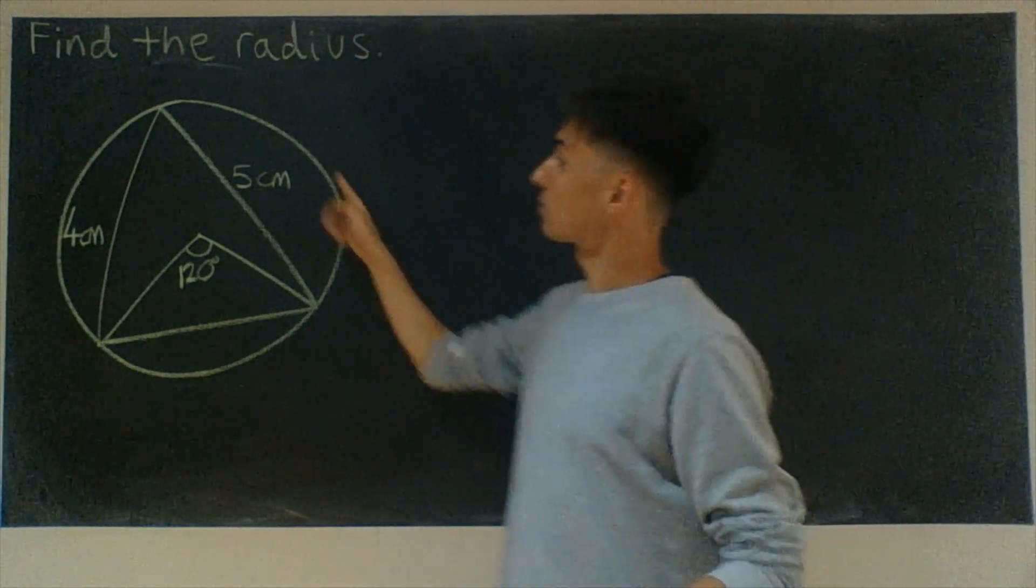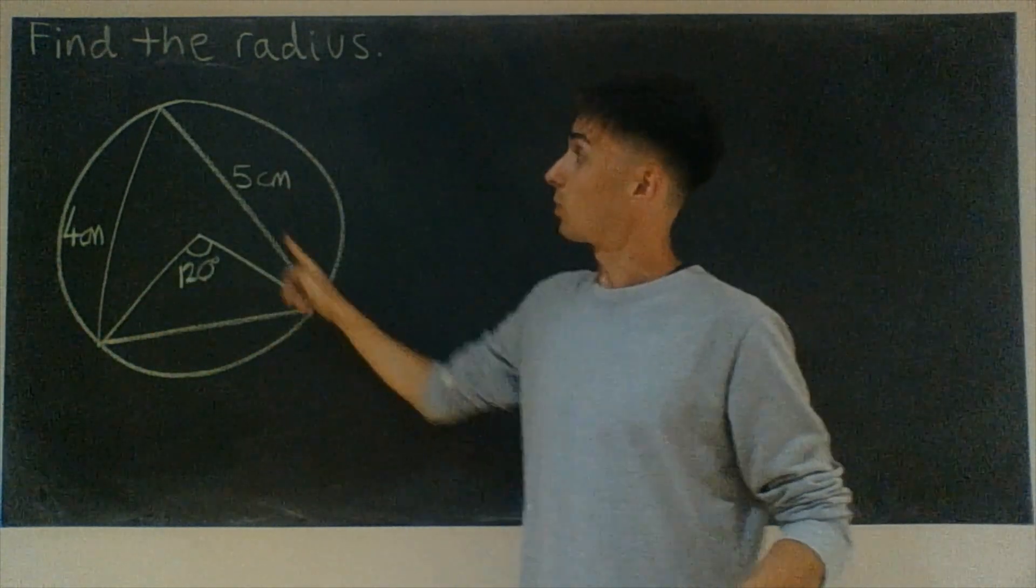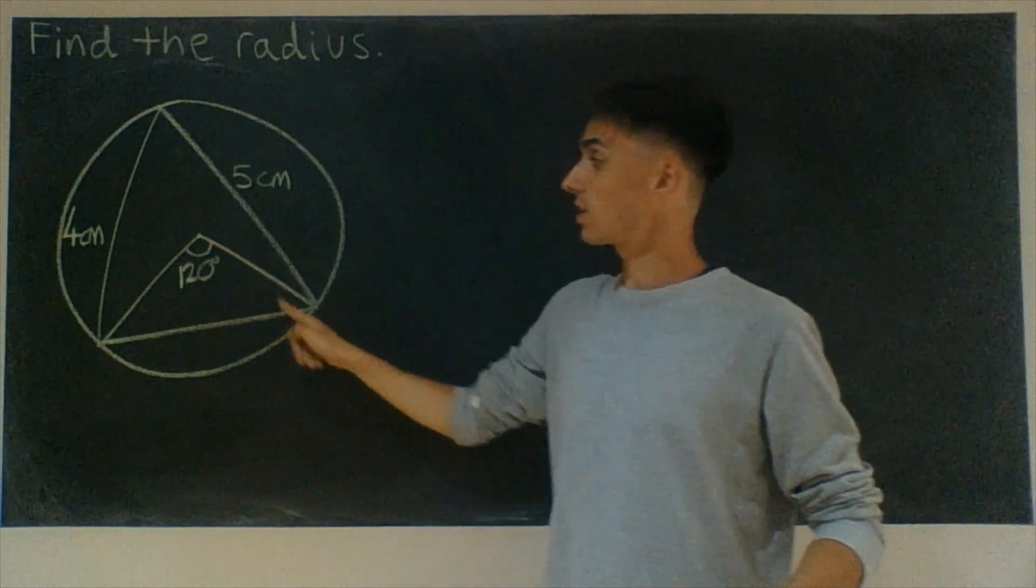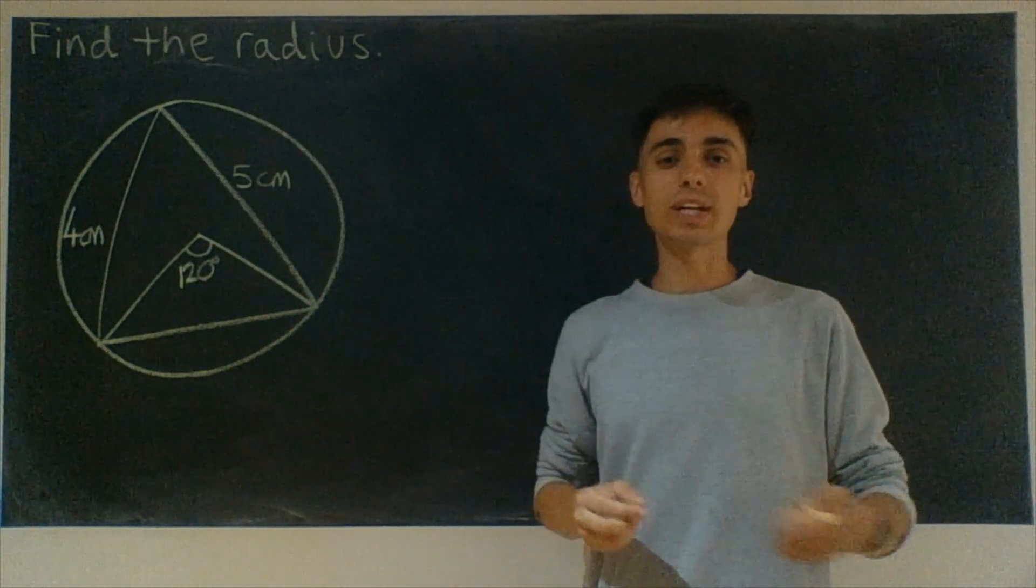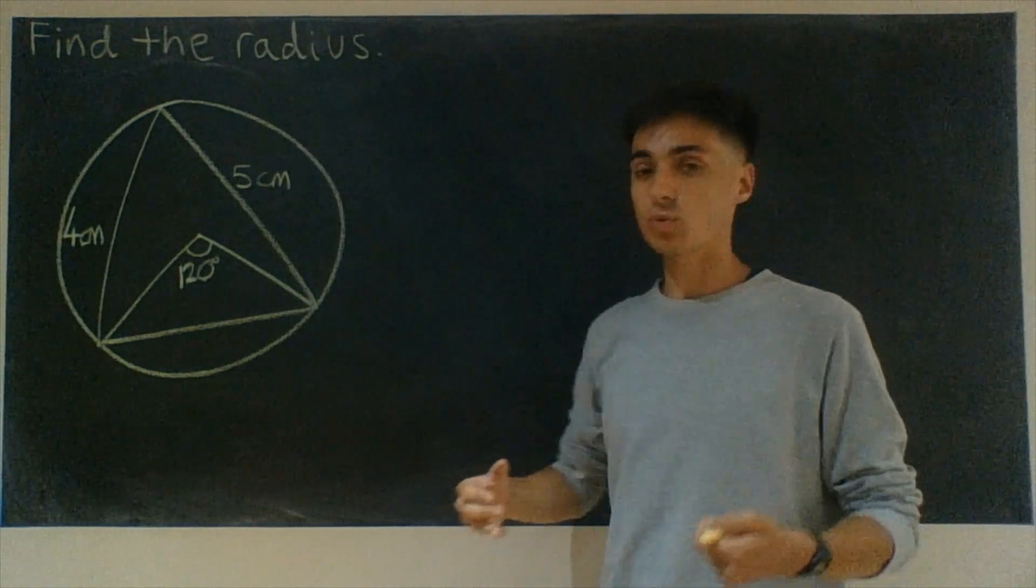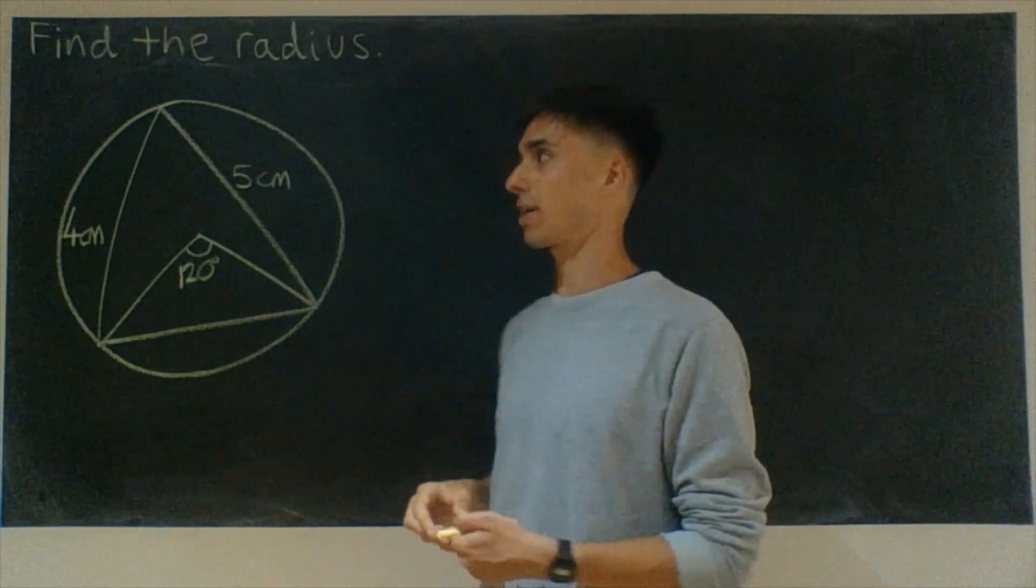In this question, we get given a big circle with two triangles inside and we'd like to find its radius. This is a really nice question because it takes us through quite a few different areas of maths.